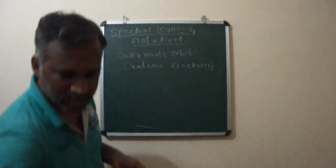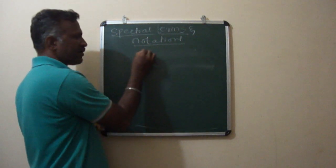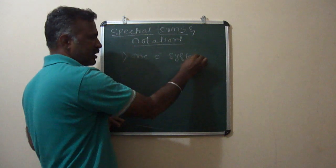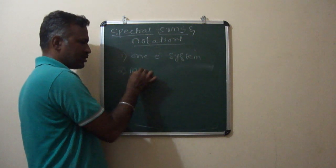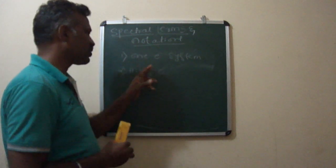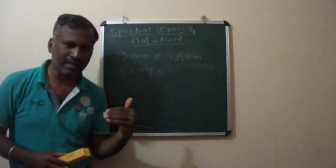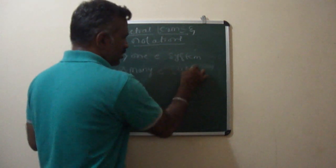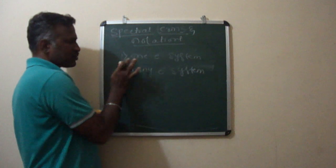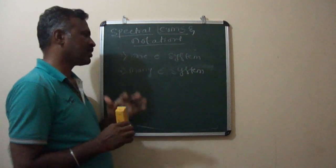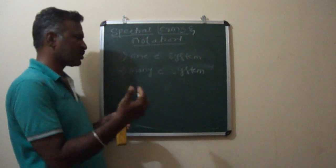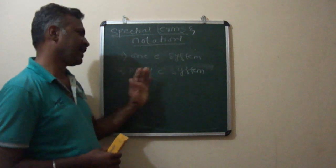If you consider any atom, atoms are divided into two groups mainly: one-electron systems, that is spectra due to one electron, and many-electron systems. So atoms are classified into two groups — one is the one-electron system, where there is only one single valence electron in the outermost orbit, and the other is the many-electron system, where there is more than one electron in the outermost orbit.